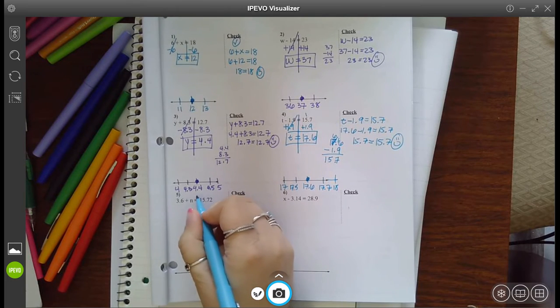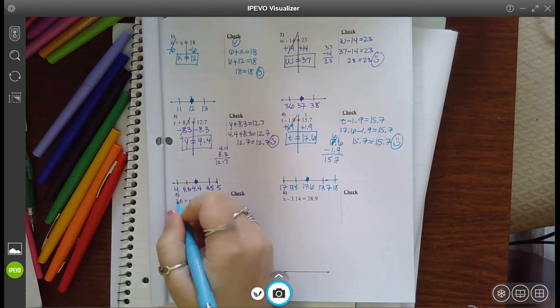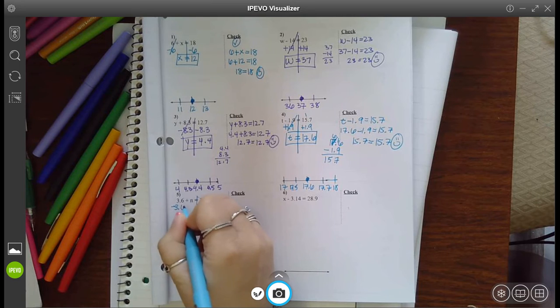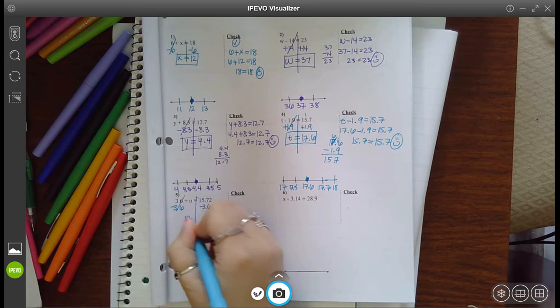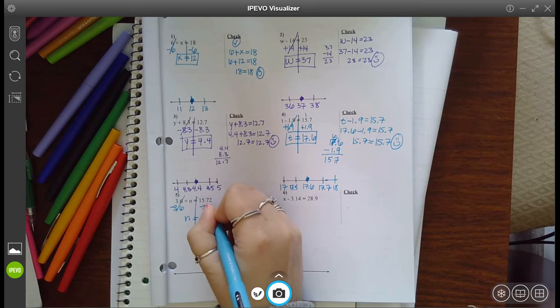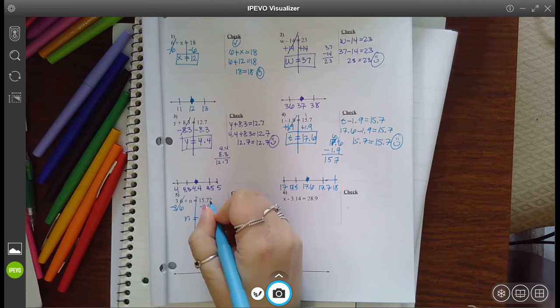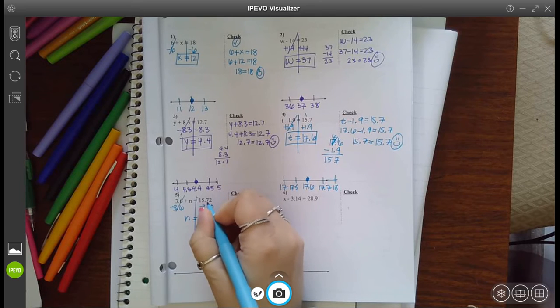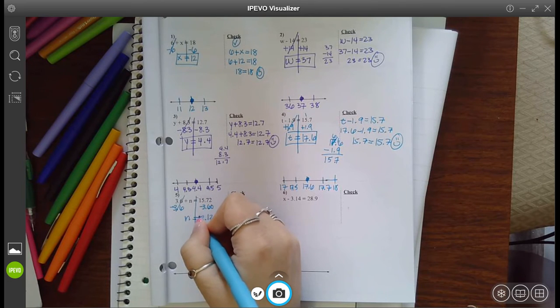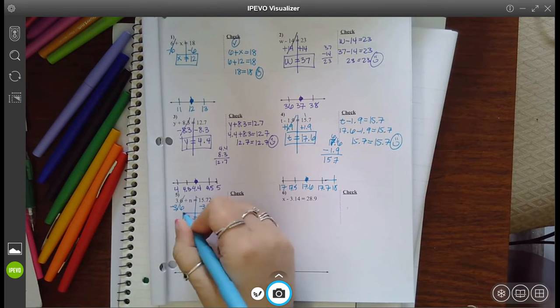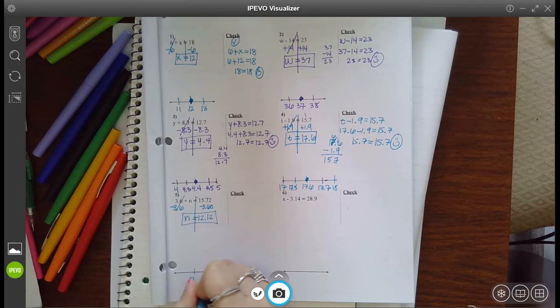I'm going to draw a line down for my equal sign. The inverse of adding is to subtract. So subtract 3.6 from both sides. Those cancel. Bring down your n. And you line up your decimal, so you need a 0 right there. 2 minus 0 is 2. 7 minus 6 is 1. 5 minus 3 is 2. And then bring down your 1. So I have n as 12.12.